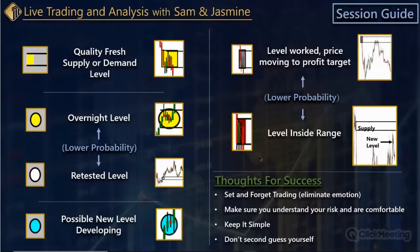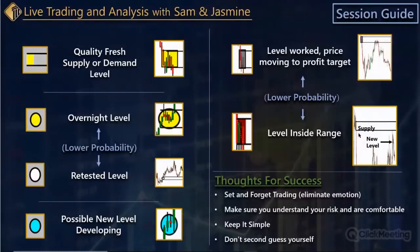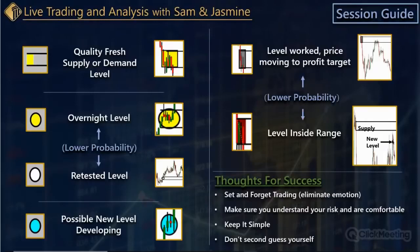Last but not least — this one's important — the brown box. This is a level that's inside a range. For example, let's assume a level was a yellow box at one point — fresh quality supply zone in the right location — price comes up to that level, starts to fall, and then as it's falling a new supply zone develops here, maybe on a smaller timeframe. That can certainly still be a good level, but it's going to be lower probability than the one in the really ideal location.